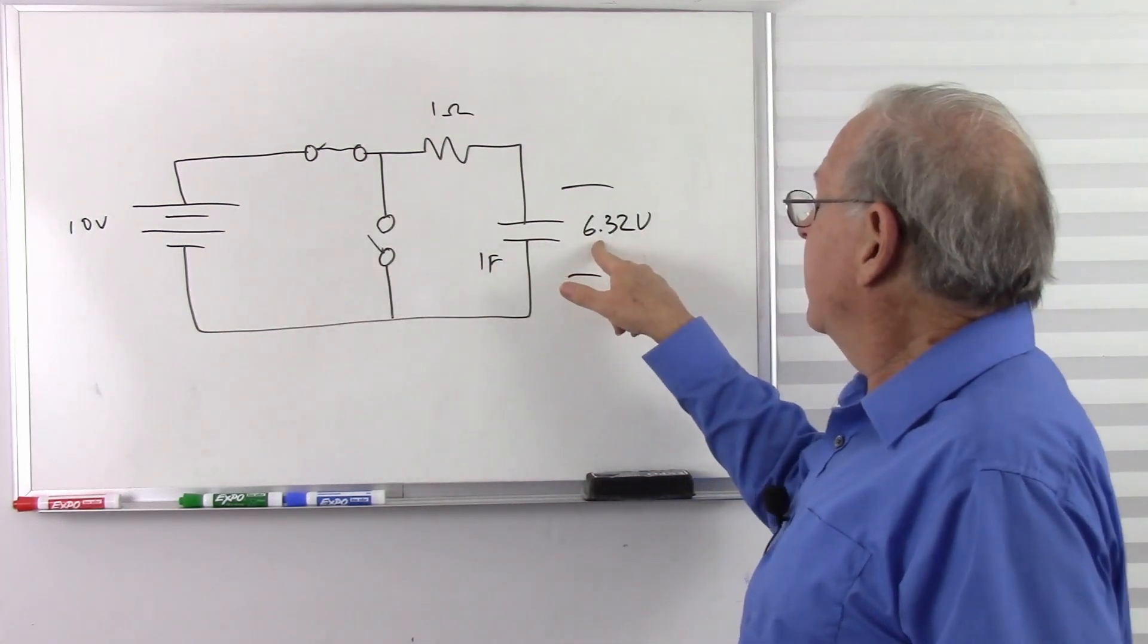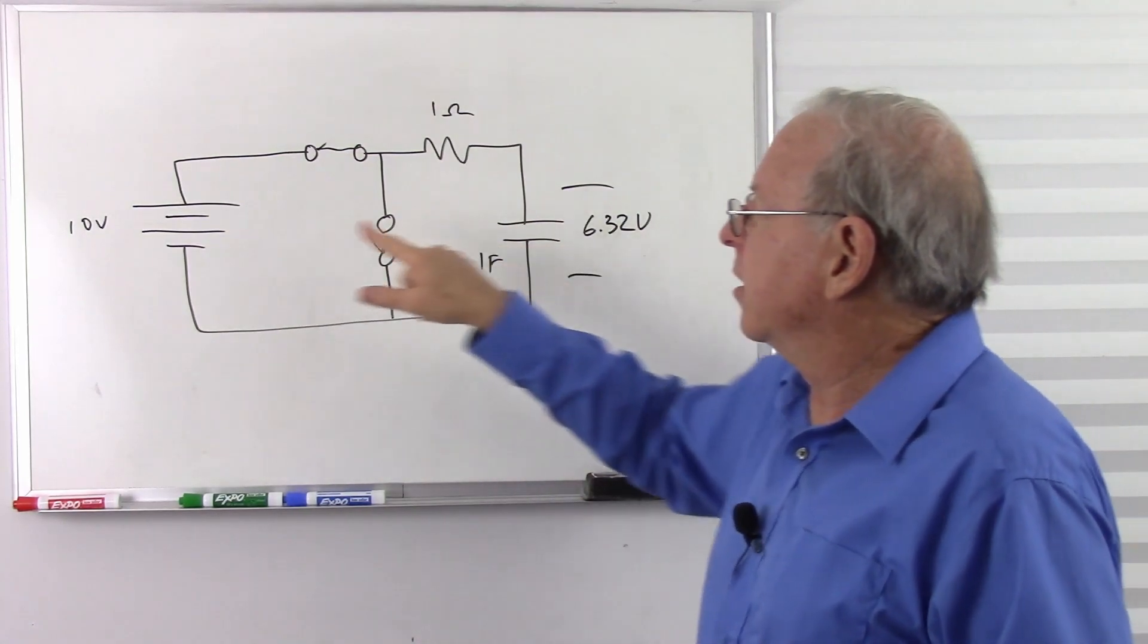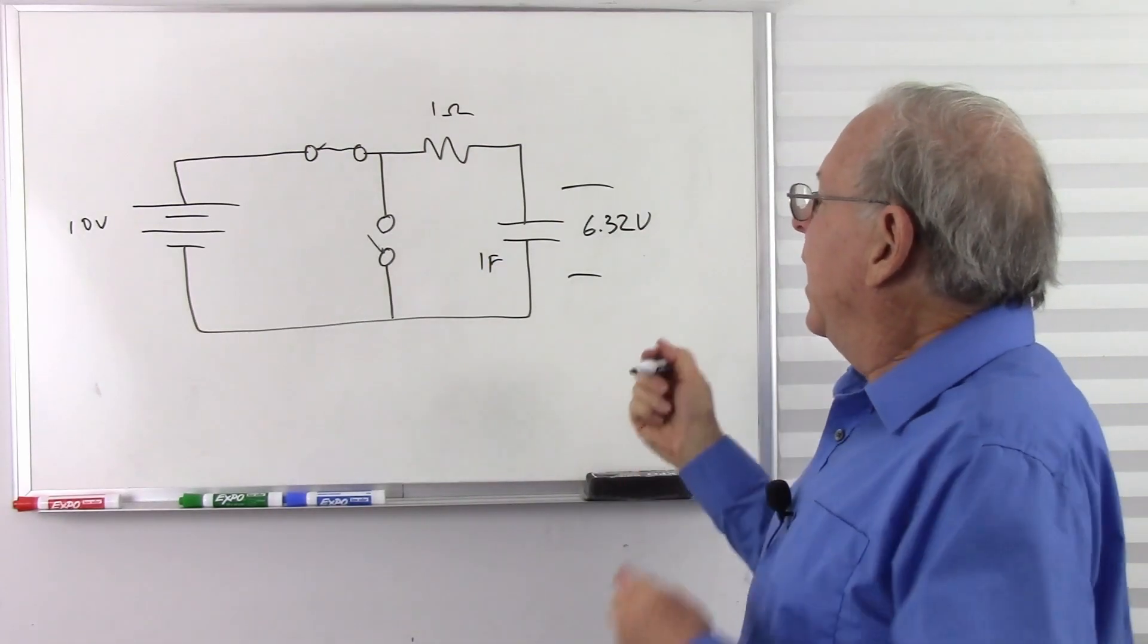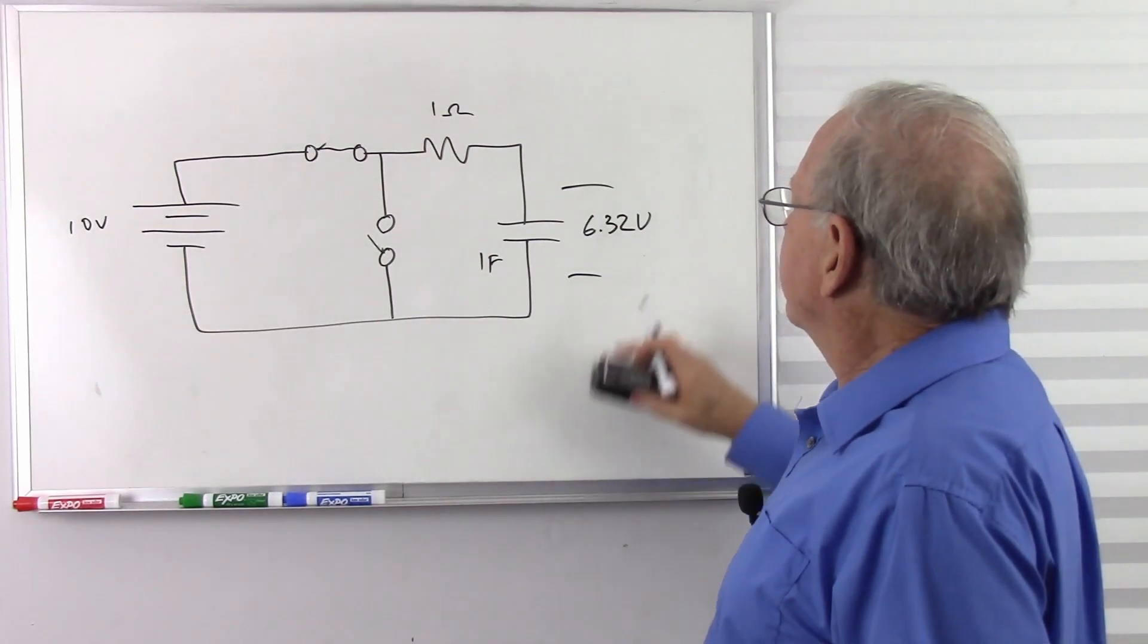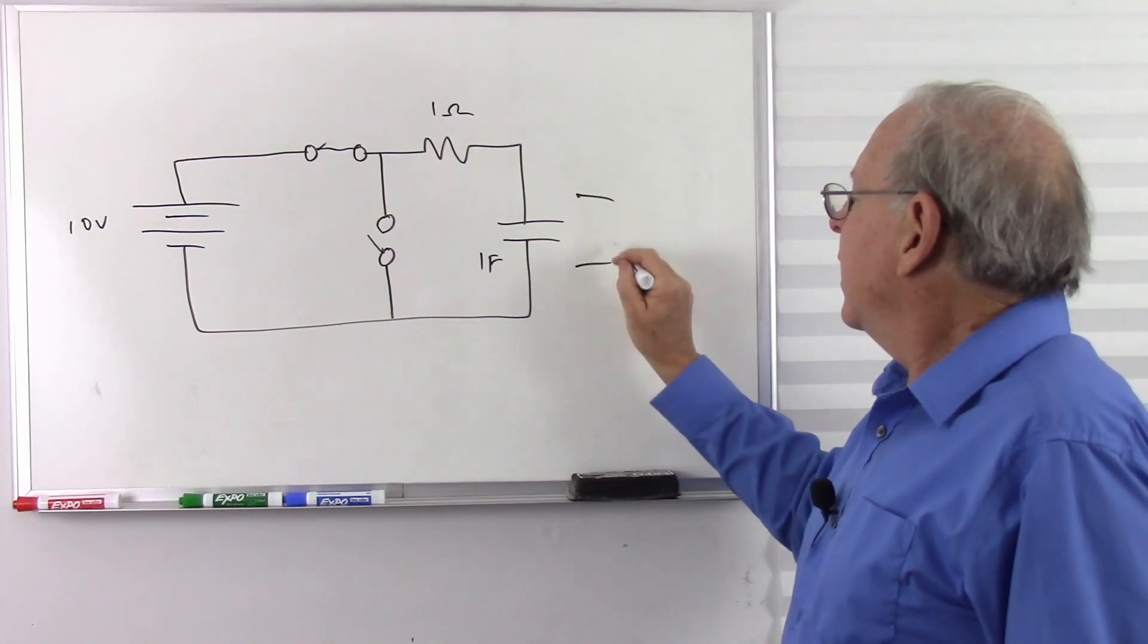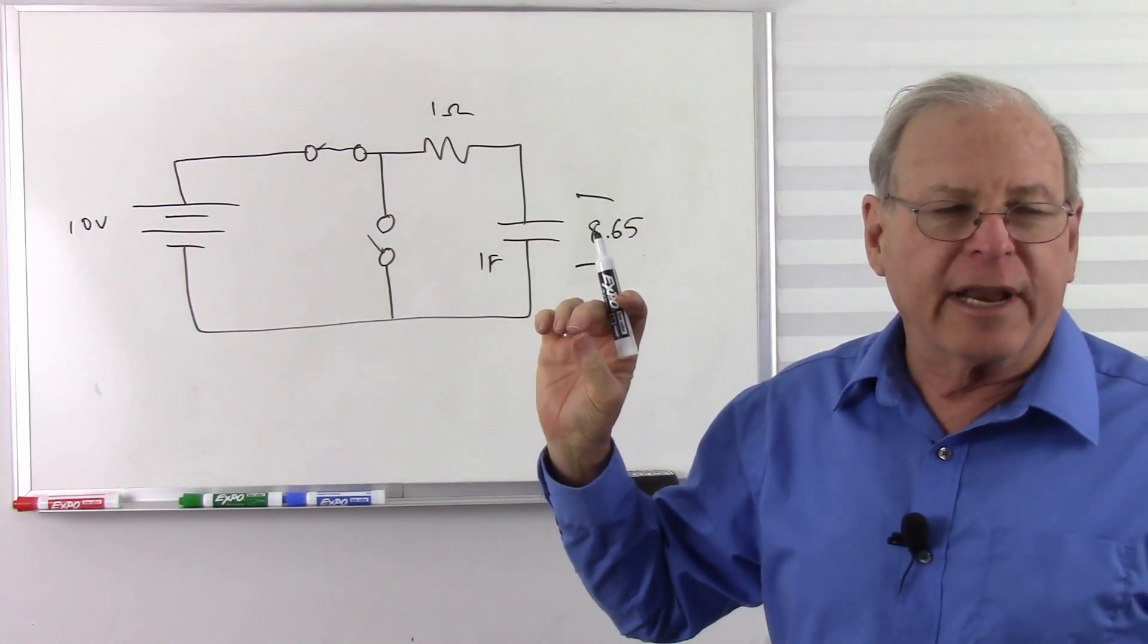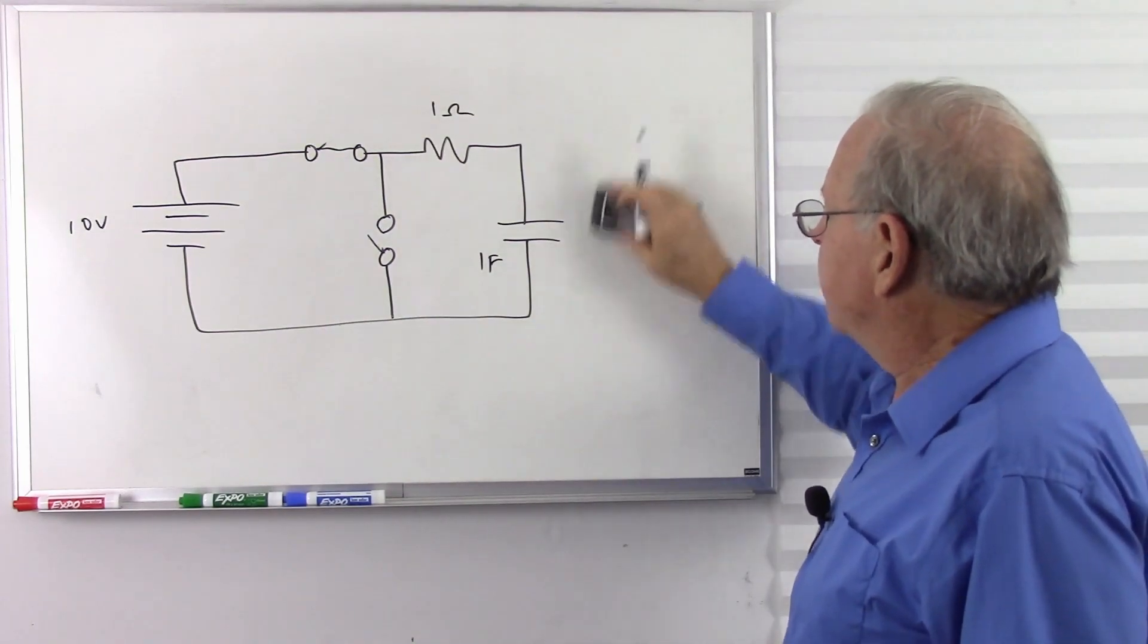So after 1 second, we have 63.2% of that voltage because 1 ohm, 1 farad. And as we keep charging it, after 2 seconds, we have 8.65 volts. After 3 seconds, we're going to have 9.5 volts, and it just keeps climbing up there.